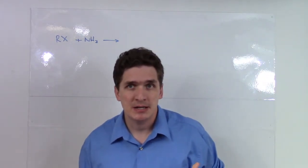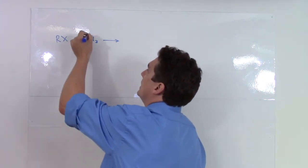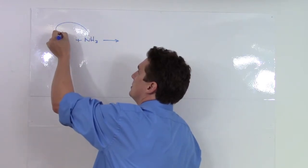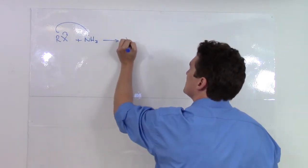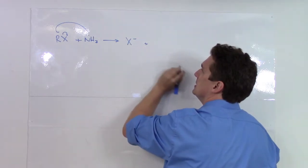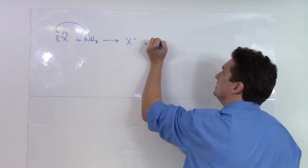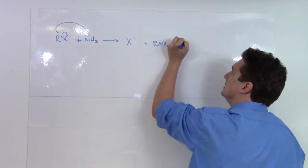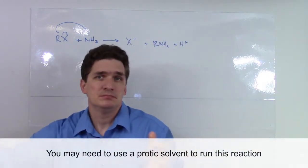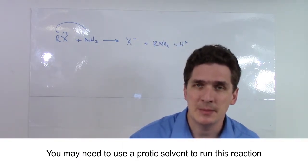Well, as you may expect, nitrogen has a lone pair and this lone pair is going to tag the R group and displace the halogen to give us this X minus. And when we lose the hydrogen, we end up getting the R-NH2. So not a problem, right? I produced a primary amine.